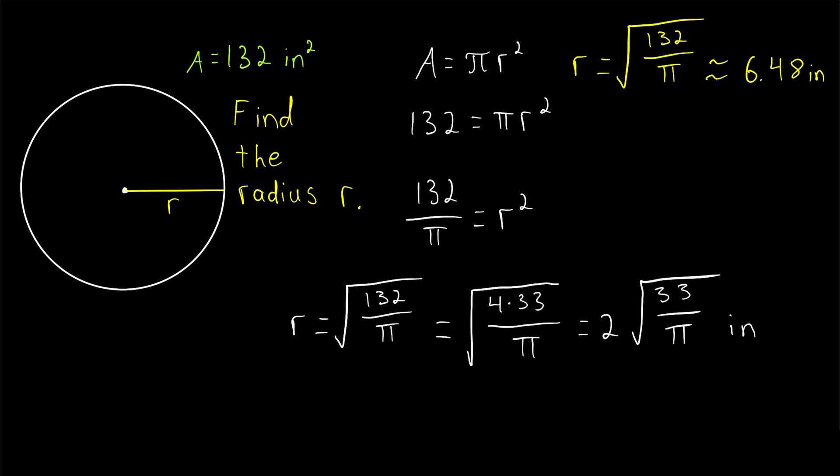But that's it. To find the radius of a circle from the area, take the area, plug it into the area formula, and solve for r. To solve for r, we just have to divide by π and then take a square root.